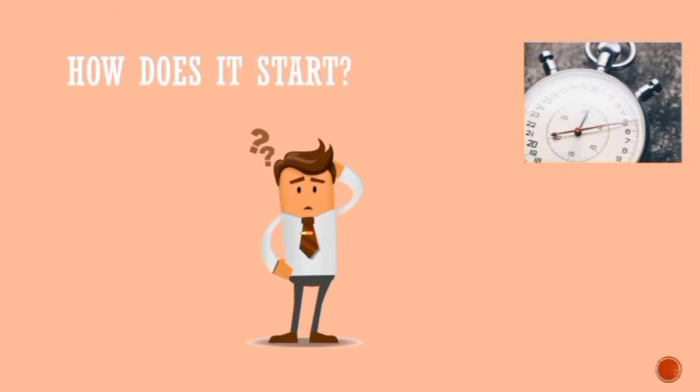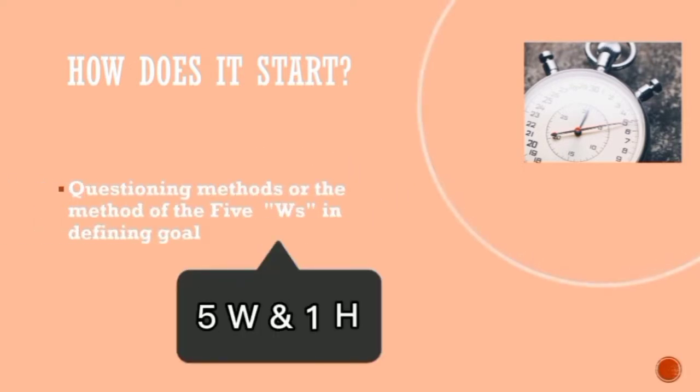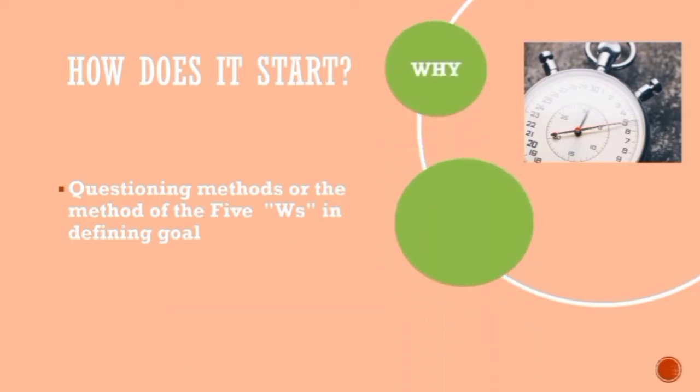How does the organization start? First, the questioning methods or the method of the 5 Ws and 1 H, such as why, who, and what can help the organization to define the goal and scope.